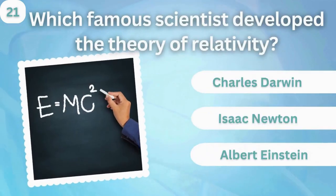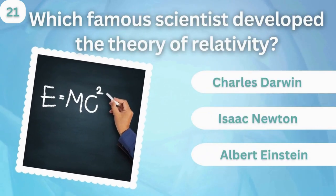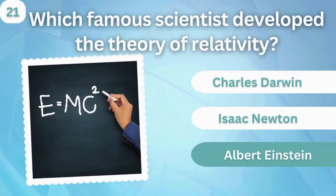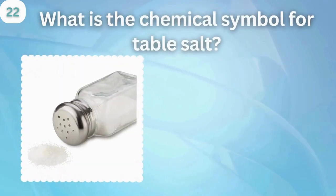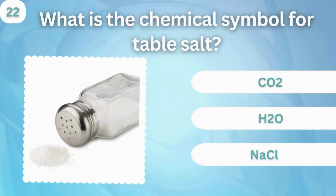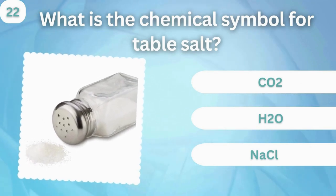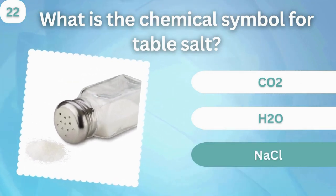Which famous scientist developed the theory of relativity? Charles Darwin, Isaac Newton, or Albert Einstein? Albert Einstein. What is the chemical symbol for table salt? CO2, H2O, or NaCl? NaCl.